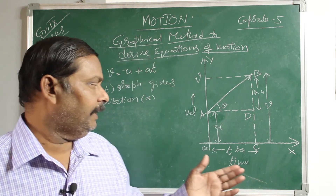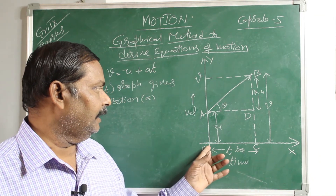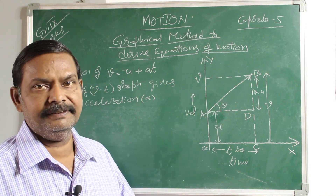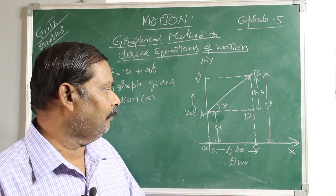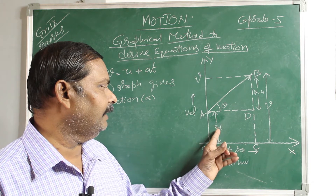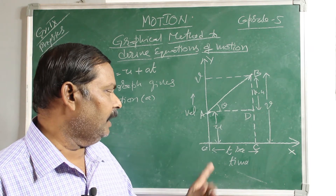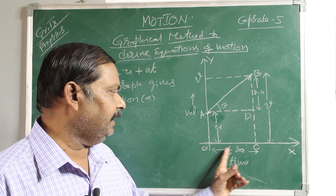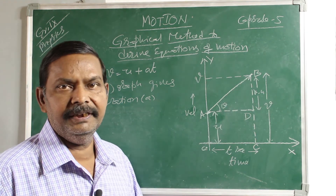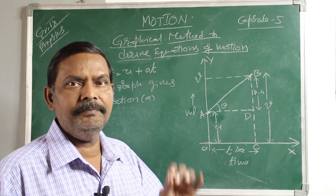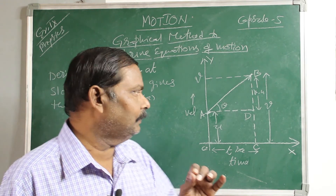In the VT graphs, we will take time on the x-axis and corresponding velocities on the y-axis. Let us assume a body started with a velocity of U; its initial position is A, and after a journey of T seconds, the body reaches position B, where the final velocity is V.